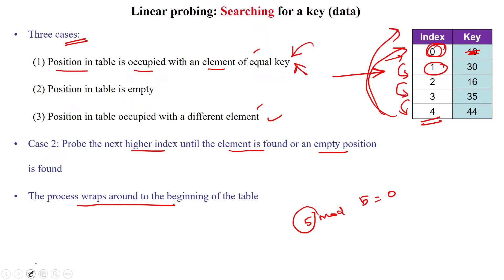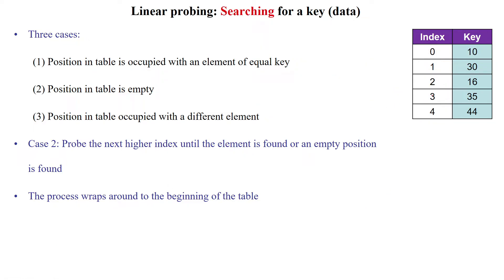Suppose we are starting from the third index. We are checking for the value 45. So 45 mod 6 gives us 3. In the index number 3, we are not having 45, so we need to continue checking.